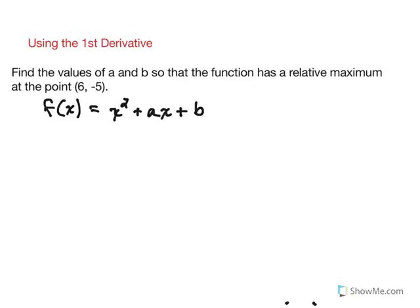Hi everyone. Let's take a look at an example of a find the constant problem in which we're given the fact that we know there's a relative extrema present and we need to figure out missing values of a and b in the function.